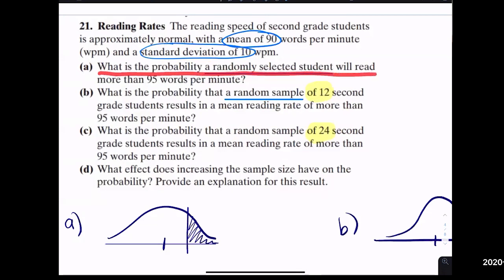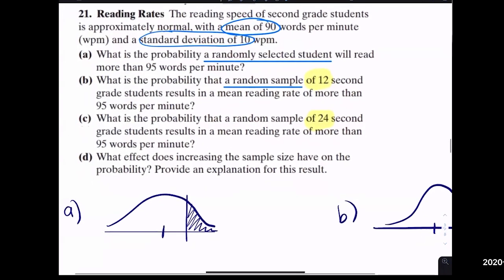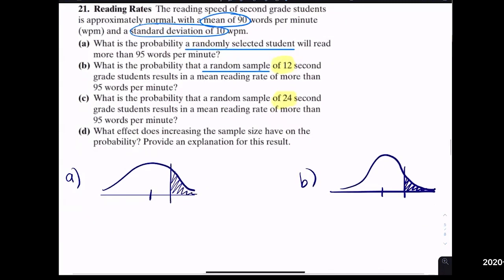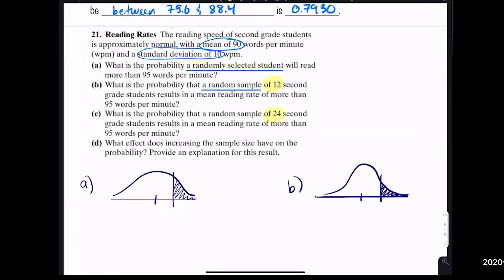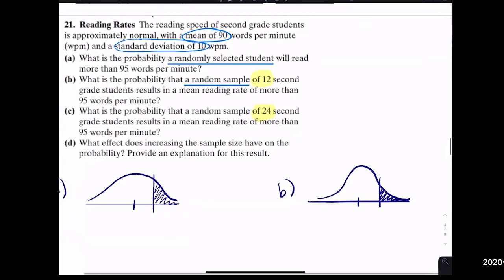Here's a test-style question with two parts. Part a is a chapter 7 question about a randomly selected student; part b is a chapter 8 question about a random sample. The reading speed of second grade students is approximately normal — so we're in Case 1. We have the mean and standard deviation and the population is normal, so the sample size doesn't need to be greater than 30.